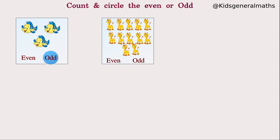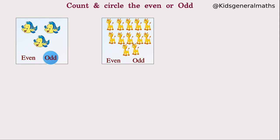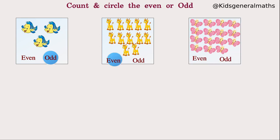Next they give us giraffe pictures. We want to count them: 1, 2, 3, 4, 5, 6, 7, 8, 9, 10, 11, 12. So how many giraffes? 12 giraffes. Is 12 an even number or odd number? It ends with 2, and 2 is an even number, so 12 is an even number — we circle 'even'.